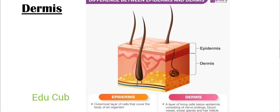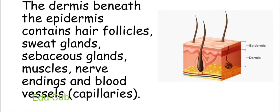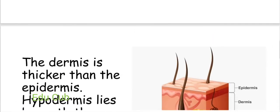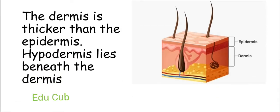This figure shows you the dermis. Beneath the epidermis, the dermis contains hair follicles, sweat glands, sebaceous glands, muscles, nerve endings, and blood vessels — that is, capillaries. The dermis is thicker than the epidermis. The hypodermis lies beneath the dermis.